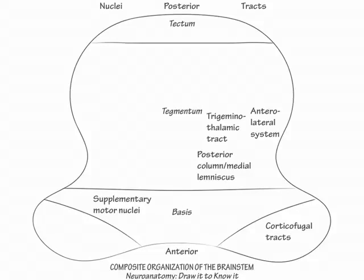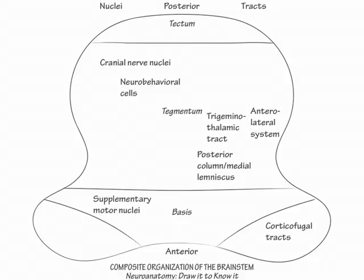Now, in the posterior tegmentum, label the cranial nuclei. The cell bodies for cranial nerves 3 through 10 and cranial nerve 12 lie within the brainstem. Next, label the neurobehavioral cells, which comprise the cells of the periaqueductal gray in the midbrain, the raphae nuclei along the midline of the brainstem, the locus coeruleus, the ventral tegmental nuclei, and the pedunculopontine and lateral dorsal tegmental nuclei.